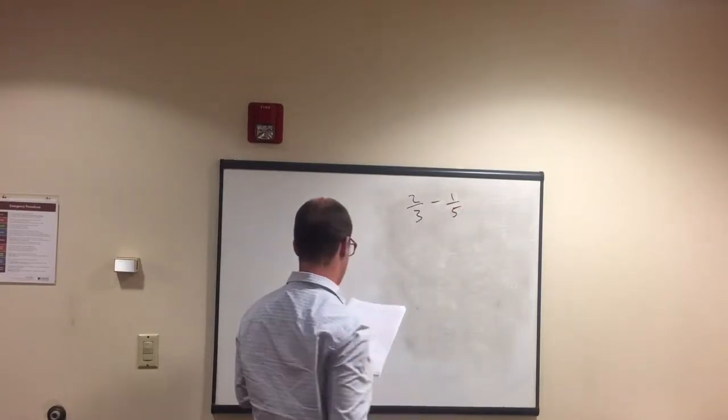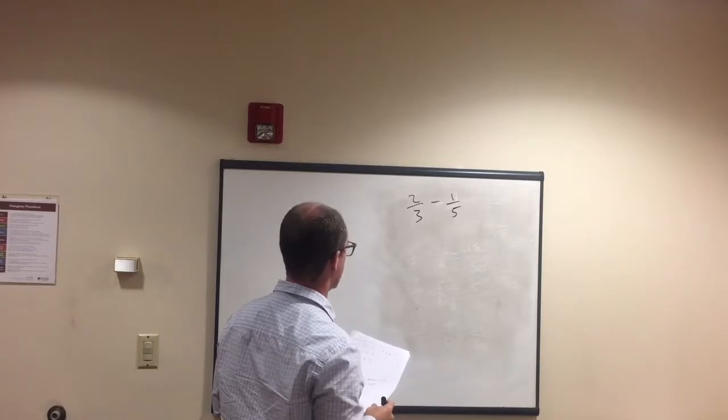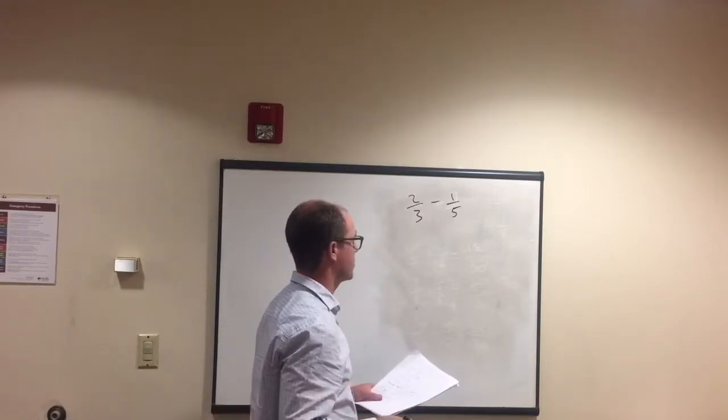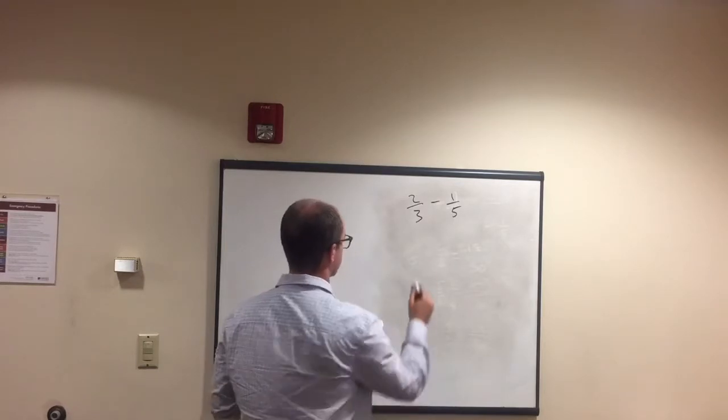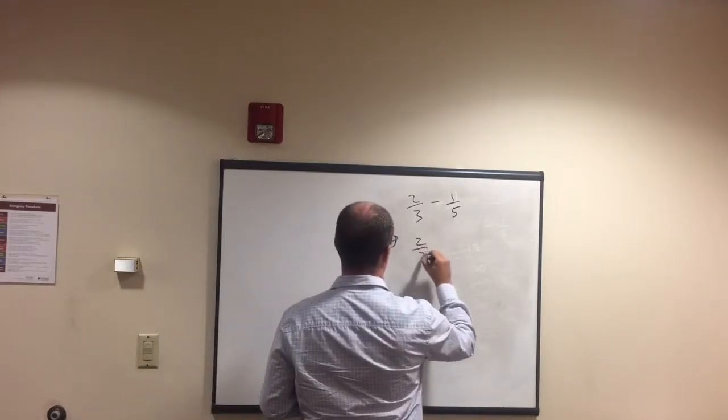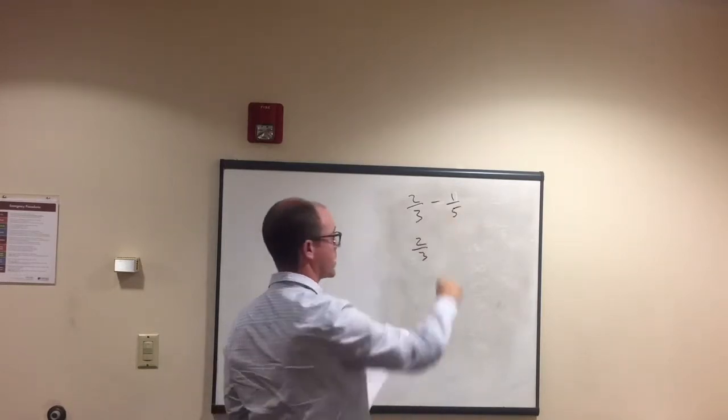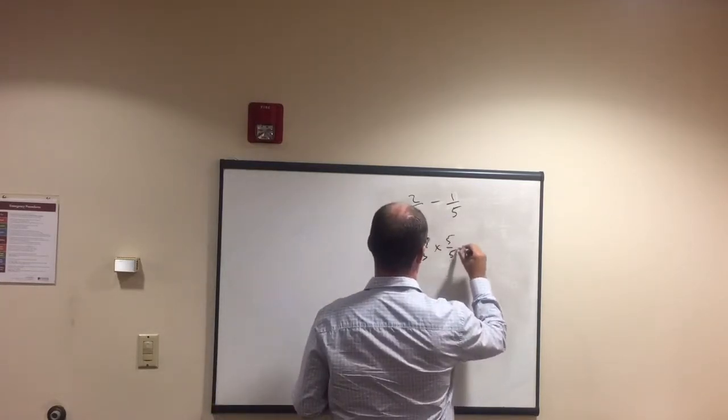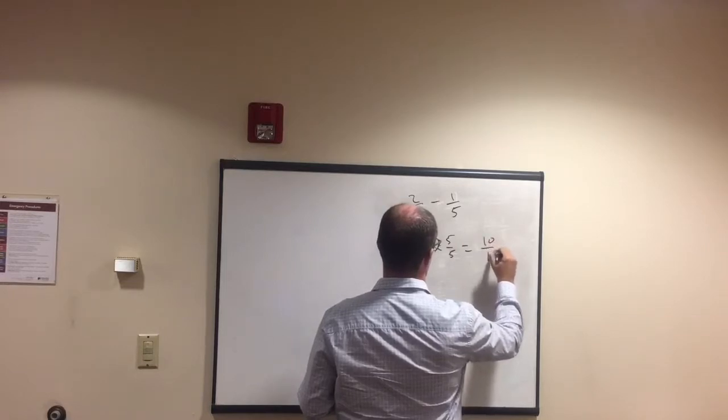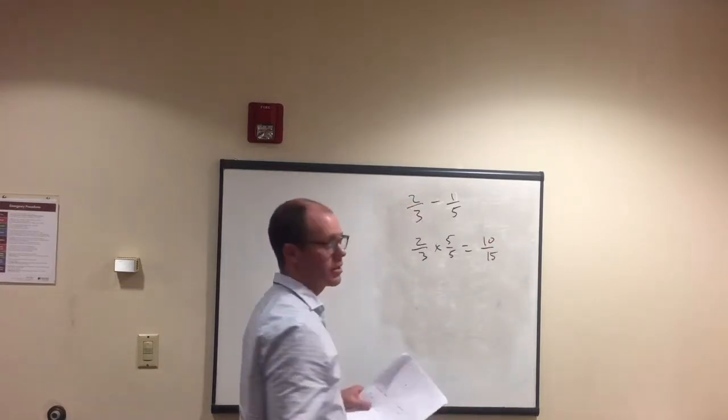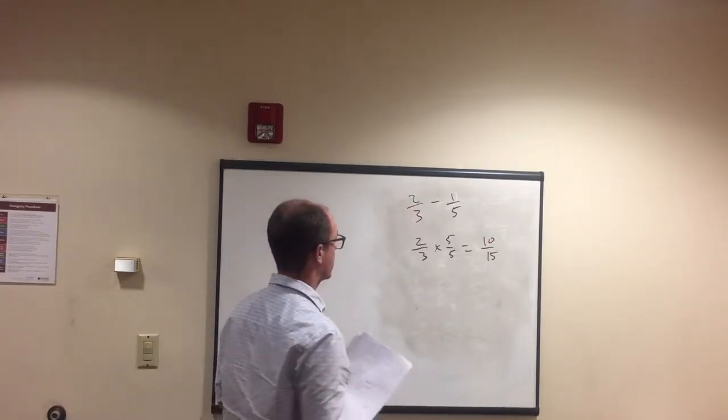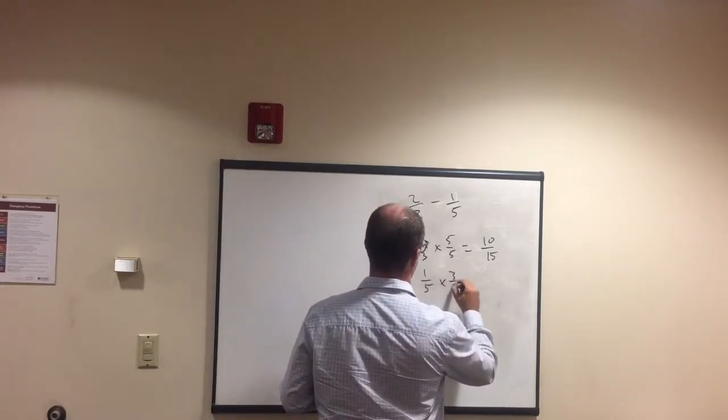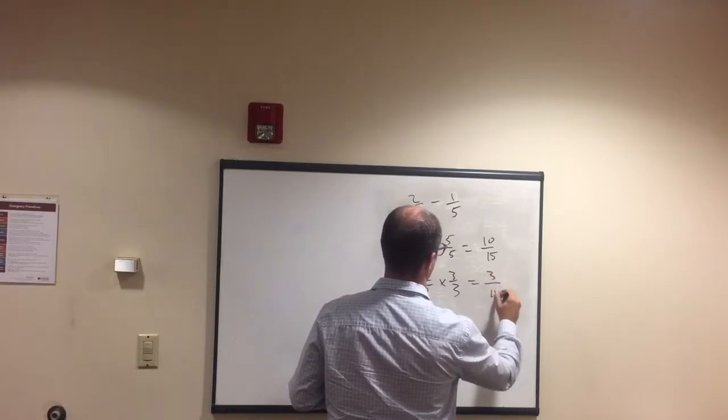Alright, so we have two thirds minus one fifth. Okay, same thing. So, we just did two thirds plus one fifth. And if you remember, we went... Same thing, though. You can't subtract these when that denominator is different. So, it's the same thing. Two thirds times 5 over 5 equals 10 over 15. Remember doing this just a second ago.